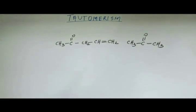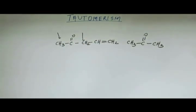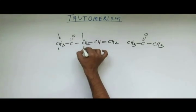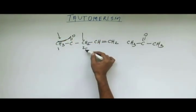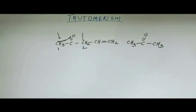The first step: a base will come and abstract H+ from the alpha position of this keto. There are two alpha positions here. We need to identify from which alpha position hydrogen will be abstracted. If you abstract from position one, there will be resonance with the C=O, and the anion will be resonance stabilized. If you abstract from position two, there will be resonance with the C=O but also with this double bond as well. So H+ will be abstracted from position two because the conjugate base formed will be more stable.